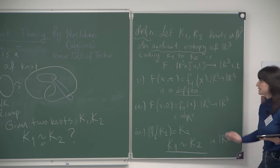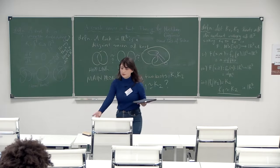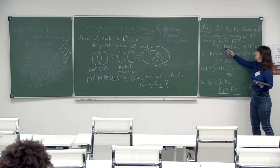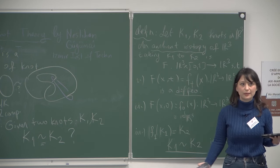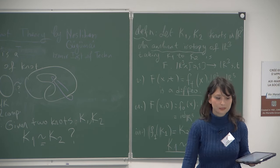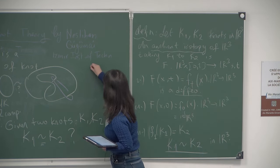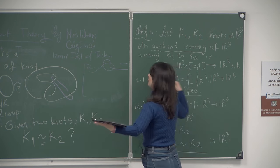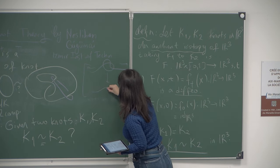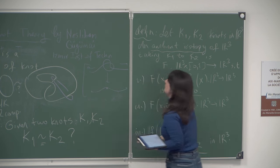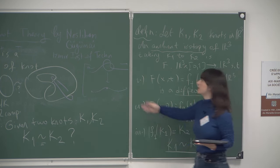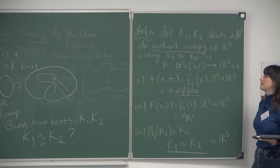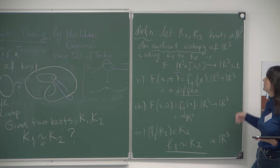If we didn't assume that the domain of the isotopy is all of R³, we could undo any knot. Imagine a string with a knot: pull the ends left and right and as time passes you lose the knot. Isotopy on just the domain S¹ would result in a trivial theory. That's why we consider smooth deformations happening in the ambient three-dimensional space.